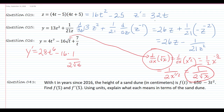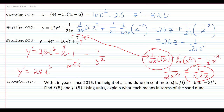And then this last term is like what we did before — this would be minus 7 over t squared, because you're bringing that to the top. It'll be t to the negative 1, bring the negative down. The only other thing to clean this up is to cancel that 2 into the 16, so I get minus 8 over the square root of t, then minus 7 over t squared.